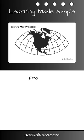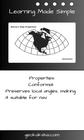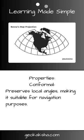Now, let's delve into its properties. Firstly, it is a conformal map projection, meaning it preserves local angles, making it incredibly useful for navigation purposes. Sailors and explorers have relied on this projection for centuries to accurately navigate the seas.